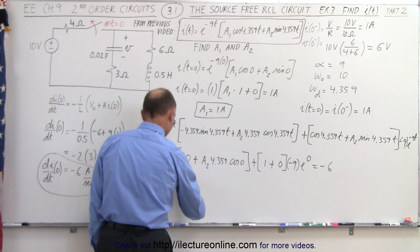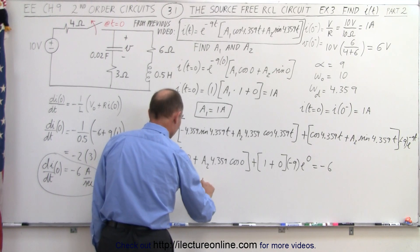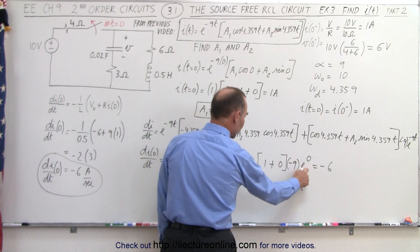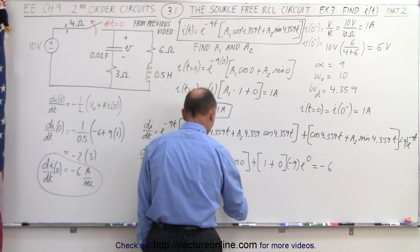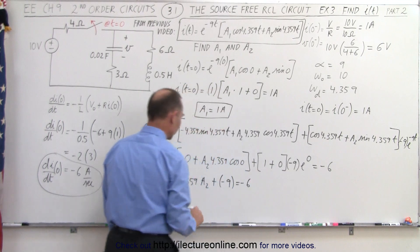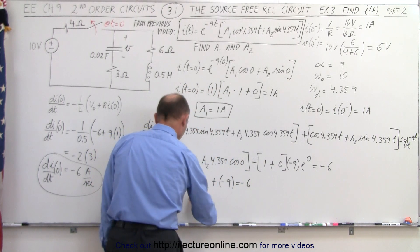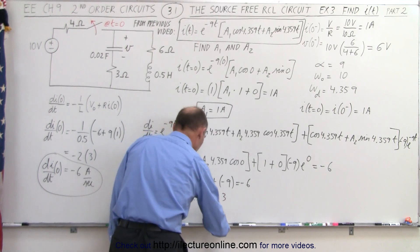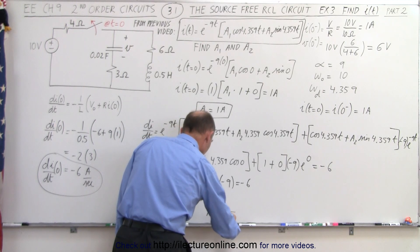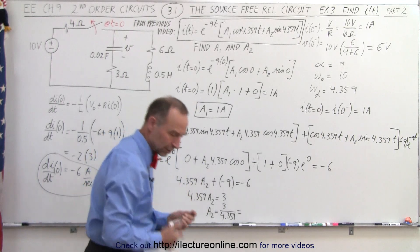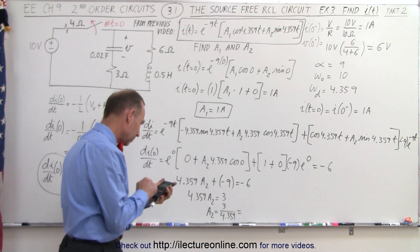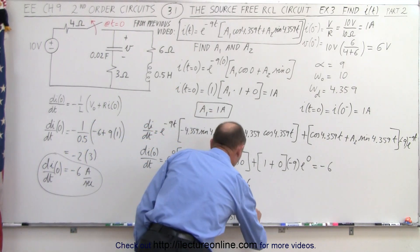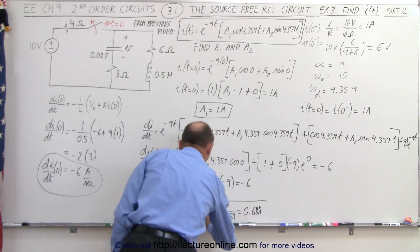Simplifying: e to the zero is one, cosine of zero is one, so we have 4.359 times a2 plus 1 times minus 9 equals minus 6. Bringing minus 9 to the other side gives 4.359 times a2 equals positive 3. Therefore a2 equals 3 divided by 4.359, which equals 0.688. We have now found the value for a2.